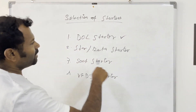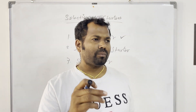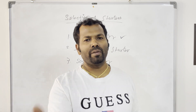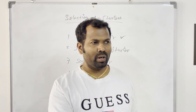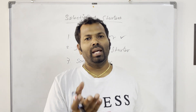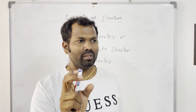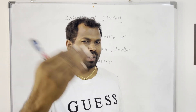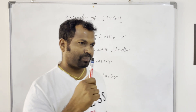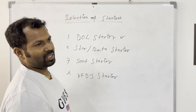Next, the Star-Delta starter — if your motor is a little bigger, like more than 5.5 kW or 7.5 kW, and you don't want speed control, you can use this Star-Delta starter to reduce starting current and starting torque.